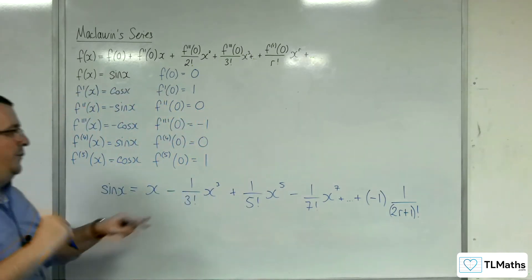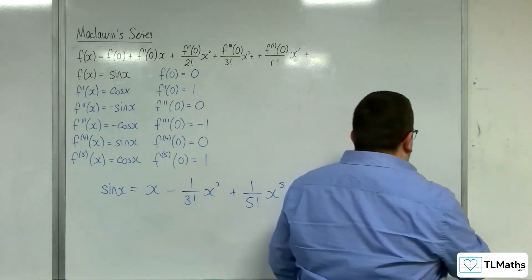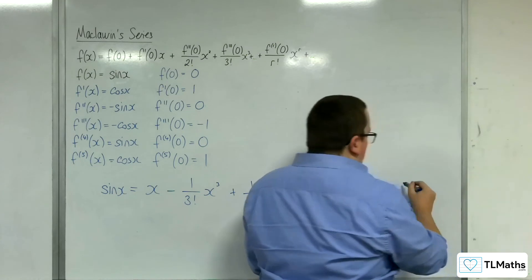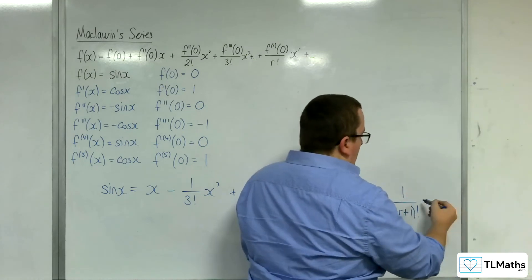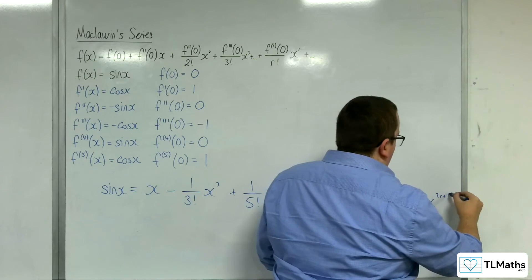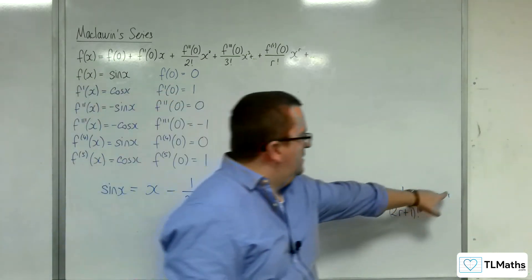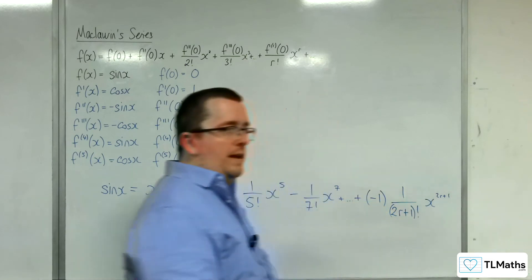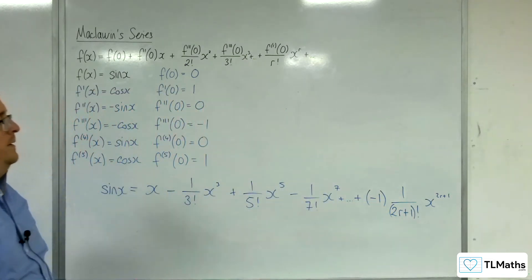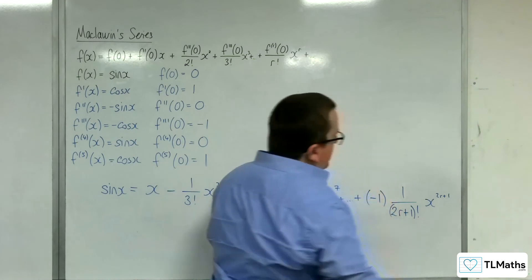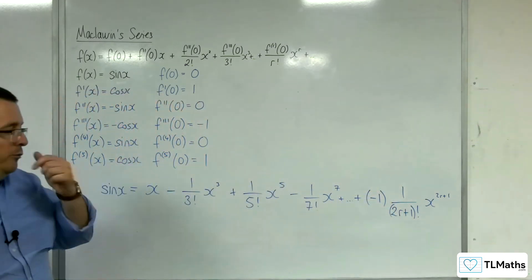So we're going to want one over two r plus one factorial. We want that number to be the same number that's in the power of x. So that's going to be x. I could write it as one, then x there, if I like. Well, if that's going to help. You can write the x to the two r plus one in the power there if you prefer. Now, we've still got to come back and deal with the power that's going in for that minus one.